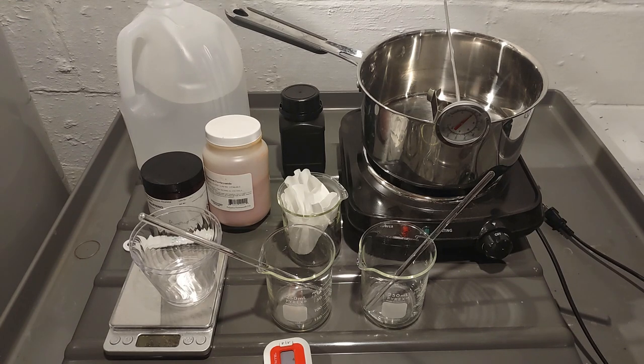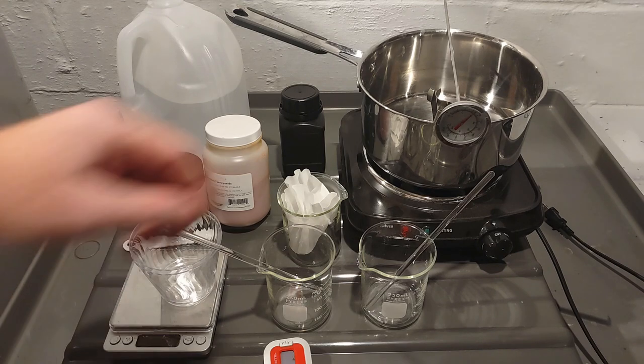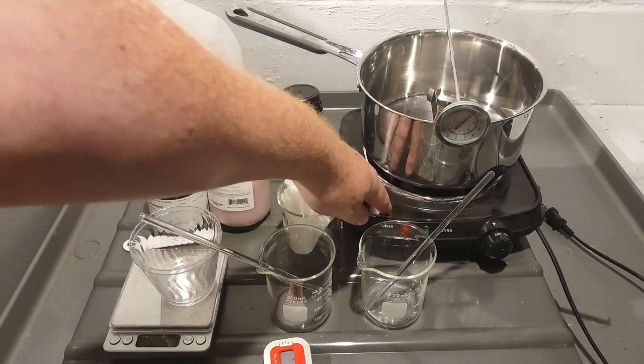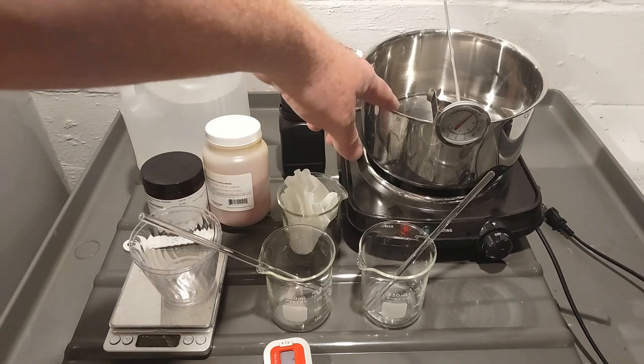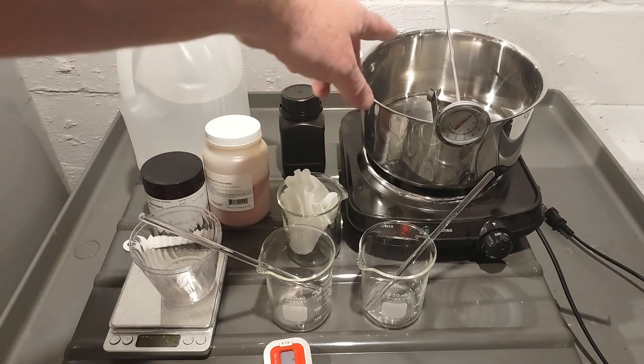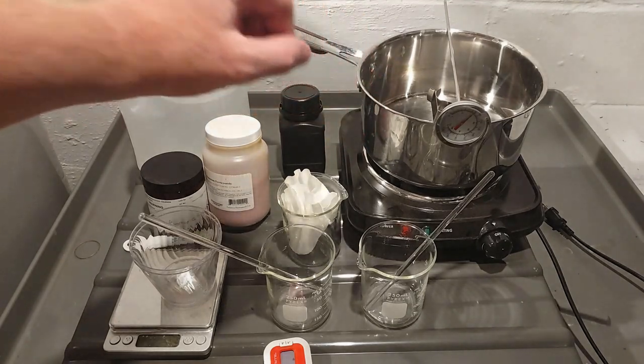Here's what you'll need for the new cyanotype formula. First, you'll need a hot plate of some kind and a pan. This is just to fill with water and act as a kind of double boiler.